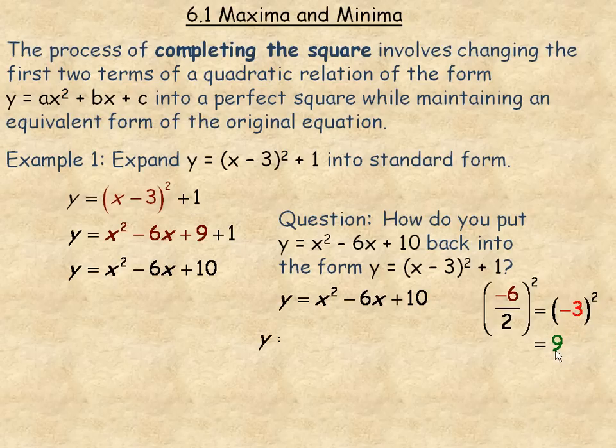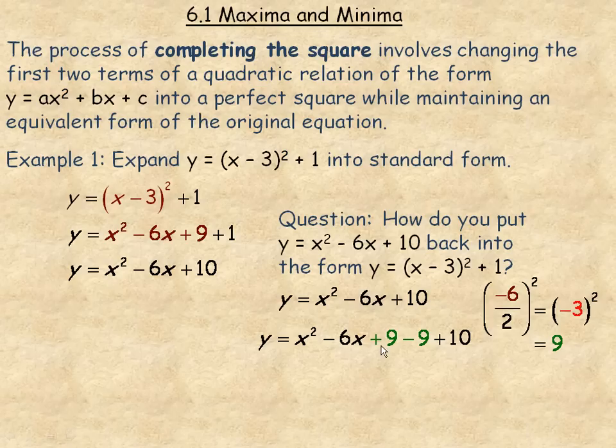Now what we are going to do with that 9 is this. And this is the general procedure. We will take that 9 and we will add it and subtract it to this quadratic relation. In net when you add 9 and subtract 9 you are really adding 0. But the reason I want that 9 there is so that x squared minus 6x plus 9, the first three terms, that is a perfect square trinomial. So I subtract 9 to keep the equivalent form of the original equation.